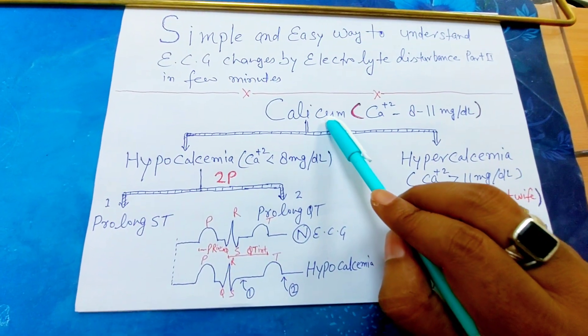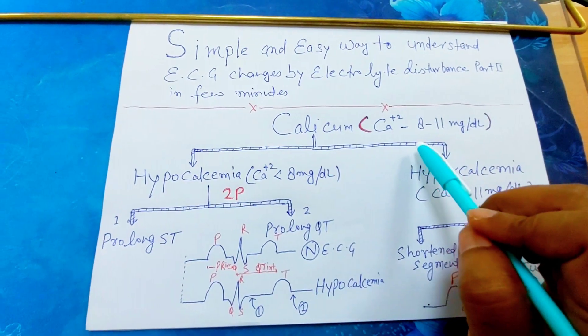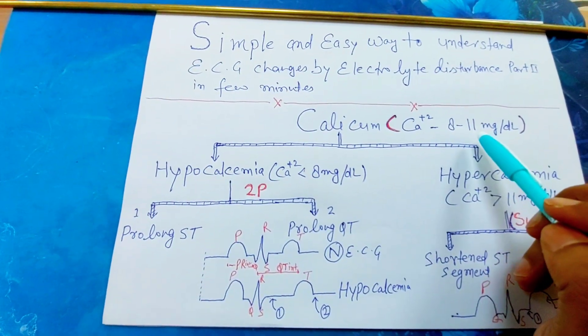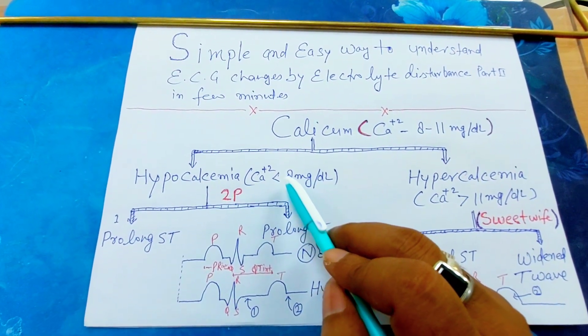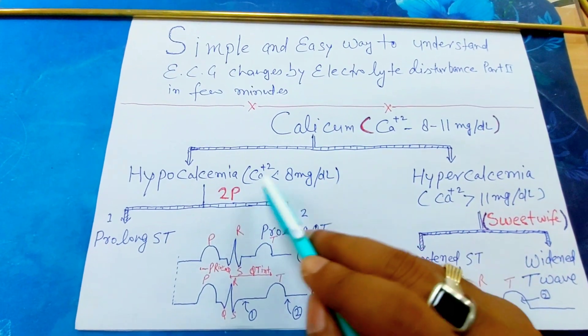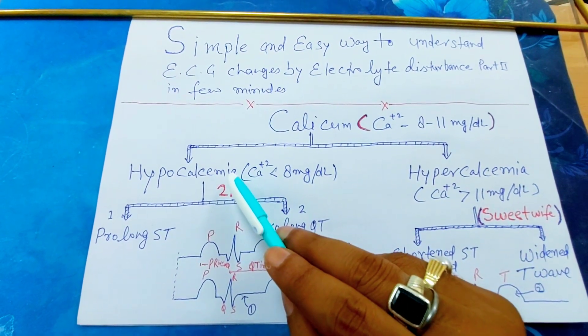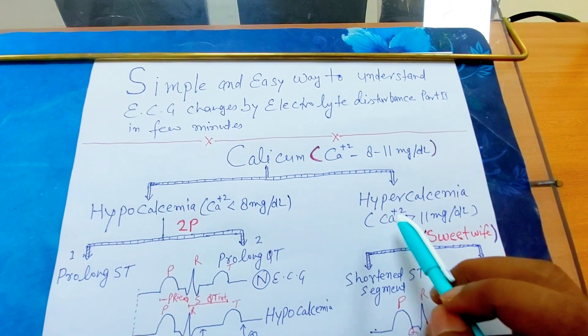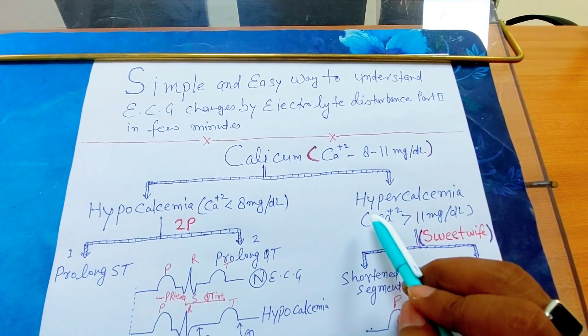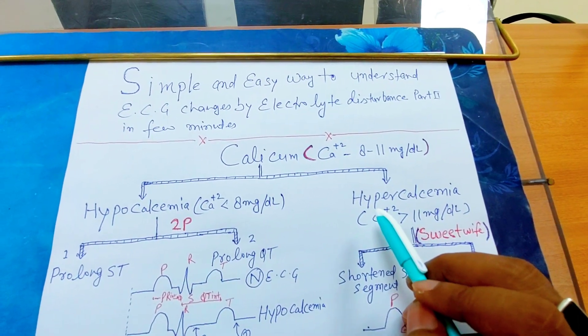Normal calcium level is 8 to 11 mg per deciliter. When this comes less than 8 mg per deciliter, the condition is called hypocalcemia. And second is when its level is more than 11 mg per deciliter, the condition is hypercalcemia.